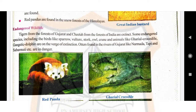The next topic is endangered wildlife. On page number 85, some pictures are given — red panda, gharial crocodile, dolphin, and otter. Cheetah from the forests of India and tiger from the forests of Gujarat have become extinct. Sparrow, vulture, cranes, owl, great Indian bustard, crocodiles, dolphin, etc. are on the verge of extinction.